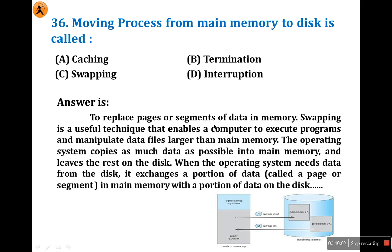Swapping is a technique that enables a computer to execute programs and implement data files larger than main memory. The operating system copies as much data as possible into main memory and leaves the rest on disk. When it needs data from disk, it exchanges a portion — called a phase or segment — in main memory with a portion on the disk. When a process is needed it is loaded in; when unused it is swapped out.